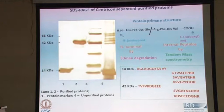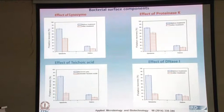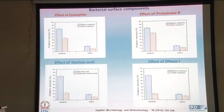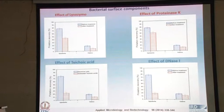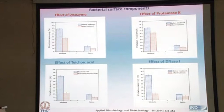Here are the results for the various enzymatic treatments to identify the role of individual cell wall components. The lysozyme treatment selectively dissolves the polysaccharides. You can see results for both sphalerite and galena — after treatment there is a decrease in the flotation recovery, but it is not very significant.